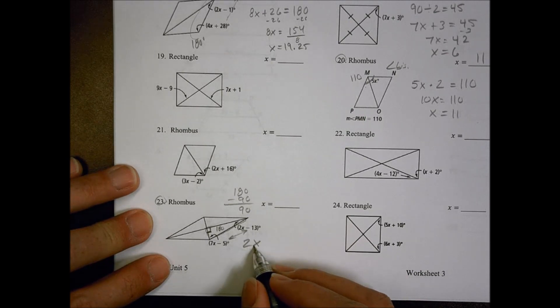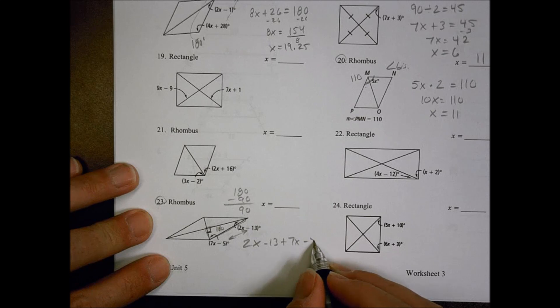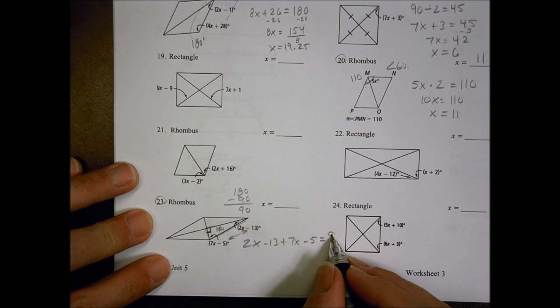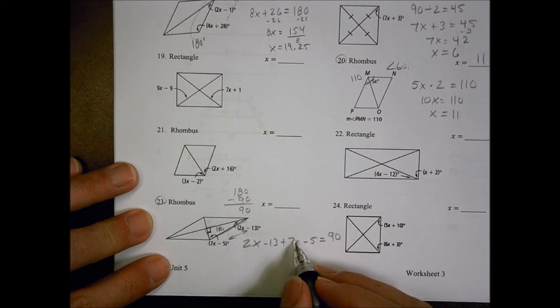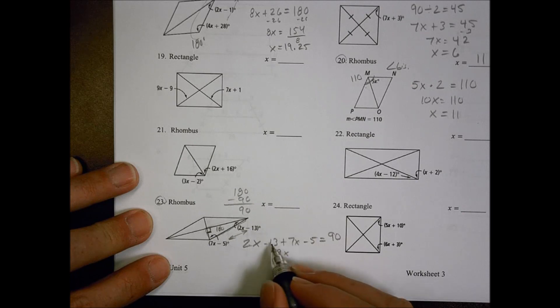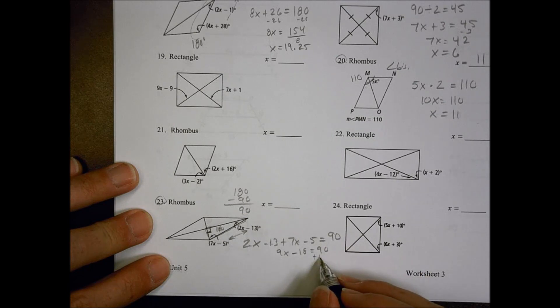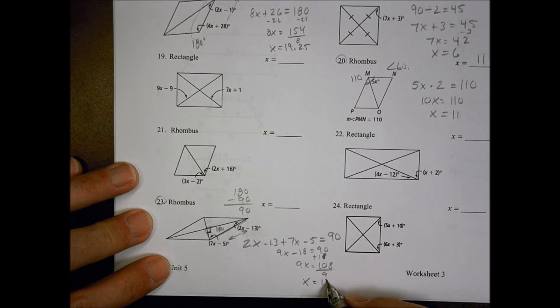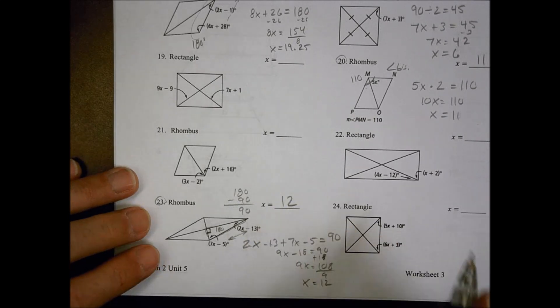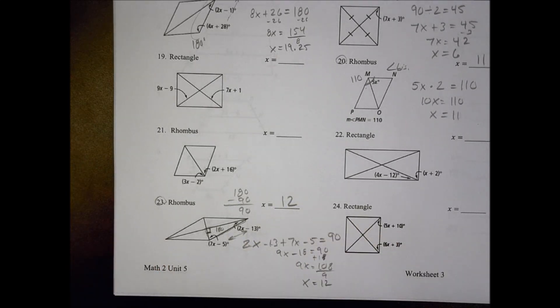So I could say that 2X minus 13 plus 7X minus 5 is equal to what's left, 90. So 2 plus 7 is 9X. 13 and a 5 becomes a negative 18. That equals 90. I add 18 to both sides. And 9X equals 108. Divide by 9. So that X equals 12. And that's the solution there. Hope that helped you out a little bit. Have a great day.